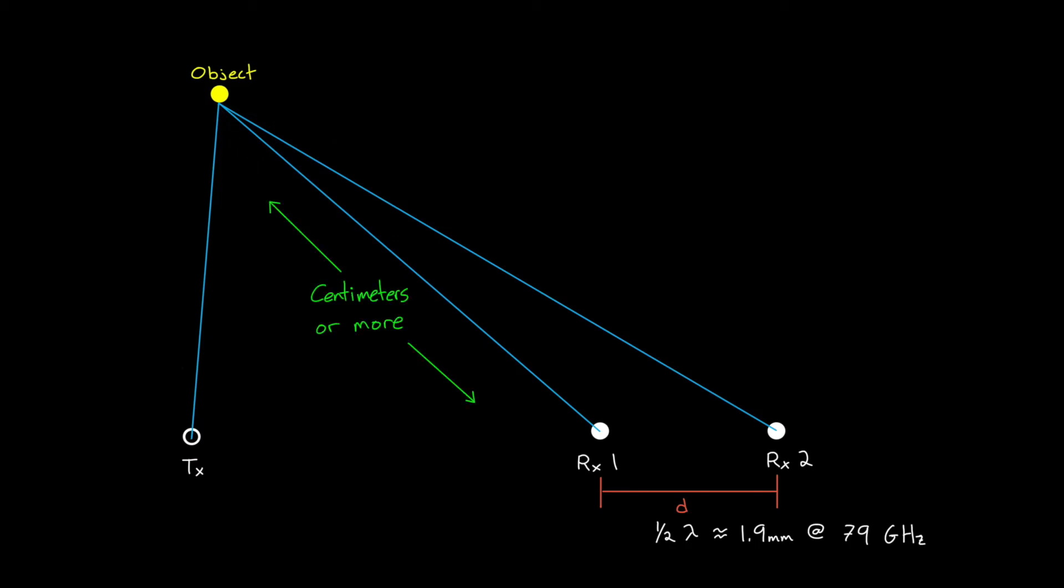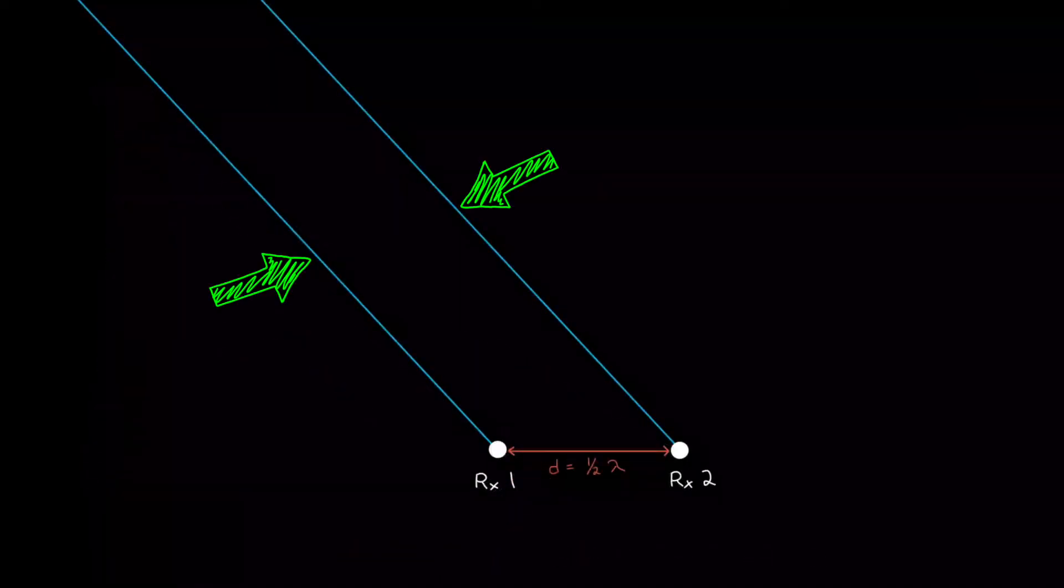You could imagine that if the object is far away, like on the order of a few centimeters or more, and you form the triangle to the two antennas that are a few millimeters apart, then the angle from the object to the two antennas will be really small. It's so small, in fact, that we can often assume it's zero, and that the two rays are parallel. So let's move the object further away, which puts it off the screen, and now we have these nice, nearly parallel lines.